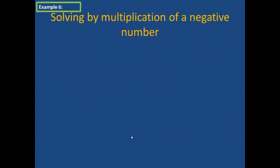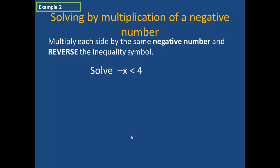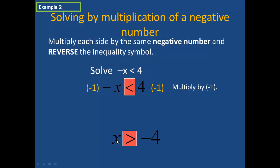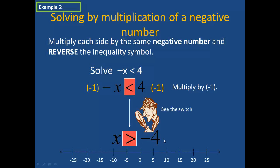In example 6, we are going to solve by multiplying by a negative number. We multiply each side by the same negative number and reverse the inequality symbol. For example, if I wanted to solve negative x is less than 4, I would multiply both sides by negative 1. This would give me a positive x and a negative 4. Notice that I have to reverse the direction of the symbol — it goes from negative x is less than 4 to positive x is greater than negative 4. So on the number line, I would put an open point at negative 4 and draw an arrow pointing to the right.